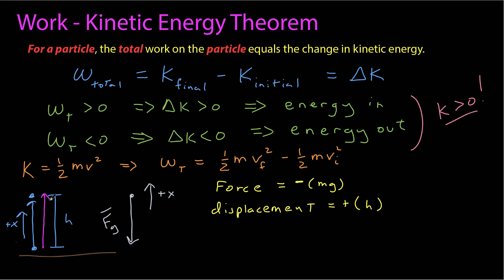And so that vector has a magnitude length of that vector, which is h, pointing in the positive direction. I want to make sure, double check, that my coordinate systems for my displacement and my force are both pointing in the same direction. So now I can calculate my work using my simple formula for the condition where I have a constant force and everything is in one dimension.